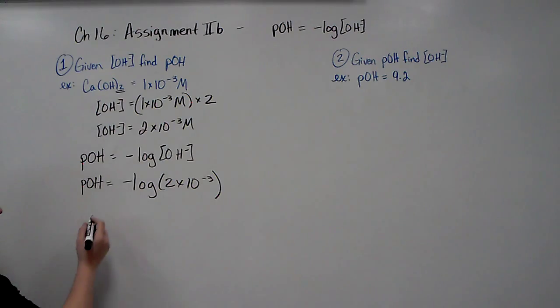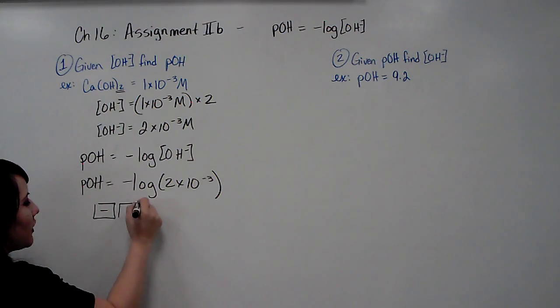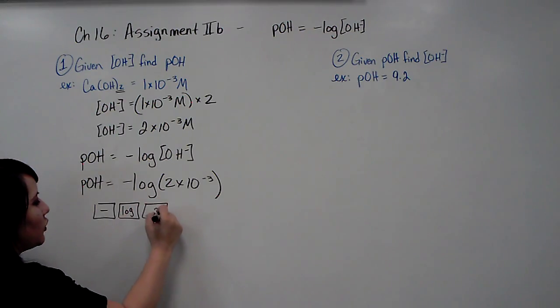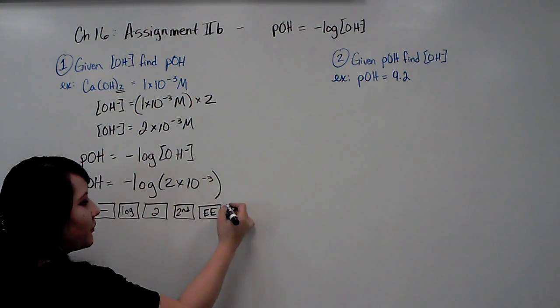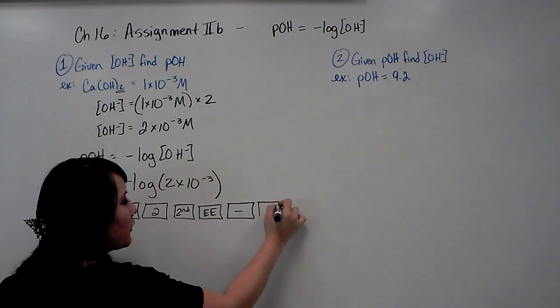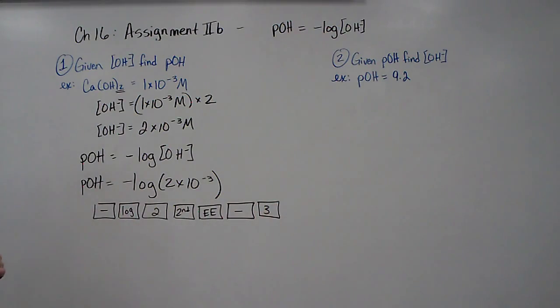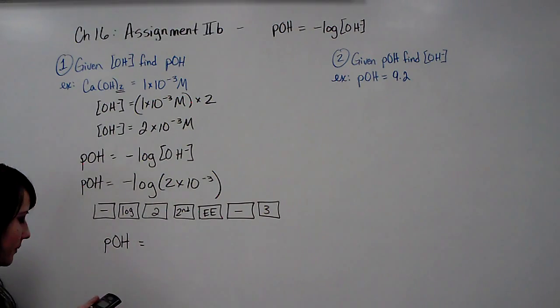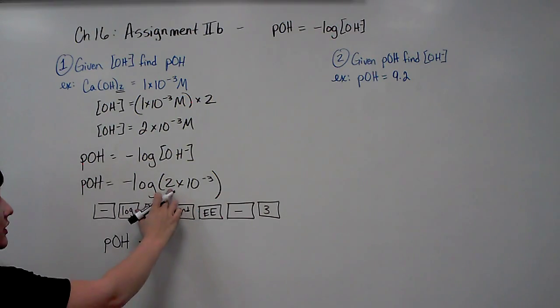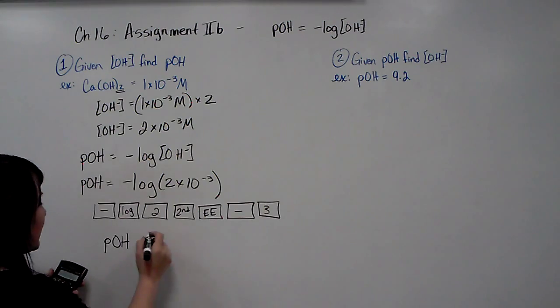So POH equals the negative log of 2 times 10 to the negative 3. And now we're going to plug it in our calculator, and you want to literally hit negative, then hit log, then 2, and you need to hit second EE or shift EE or just hit your EE button depending on your calculator, negative 3. Negative log 2 EE negative 3. I'm going to go ahead and do that now. Negative log 2 EE negative 3 equals, and you're going to get a POH of, and you want to round it off to 1 sig fig since this number is only 1 sig fig. So it's basically going to be 3.